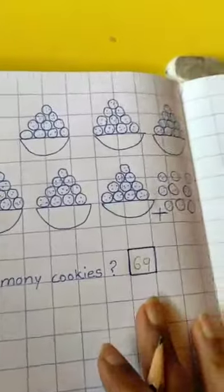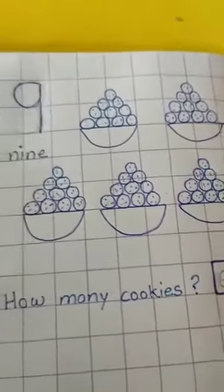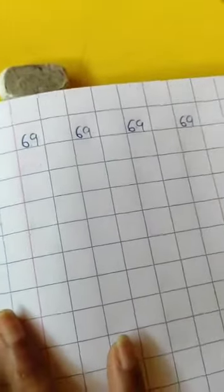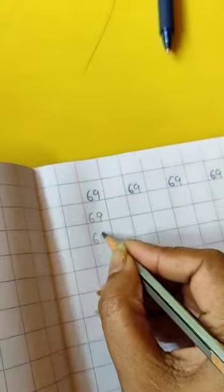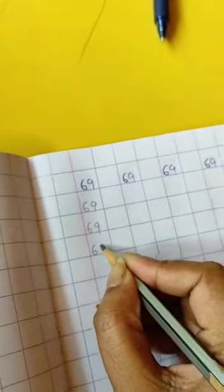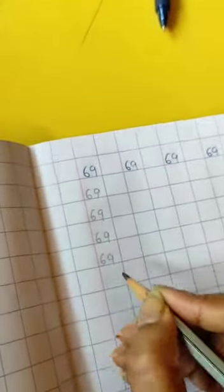So now we'll do practice on the page. Children, this is our notebook. Here we have to practice 69. And we'll write nicely 69 and complete the page.